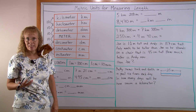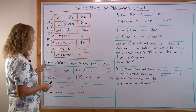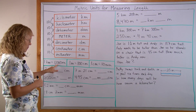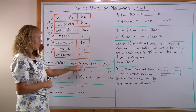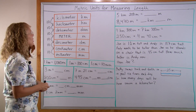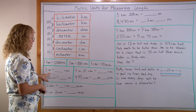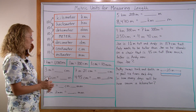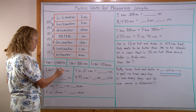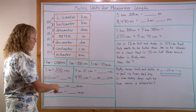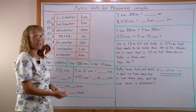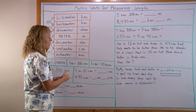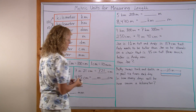Now let's look at some conversions between units. The three things you mostly need to remember: 1 kilometer equals 1,000 meters; 1 meter equals 100 centimeters; and 1 centimeter equals 10 millimeters. For example, 3 meters — one meter is 100, so three meters is 300 centimeters. And 7 meters 21 centimeters: 7 meters is 700 centimeters, and then 21 more, so 721 centimeters.